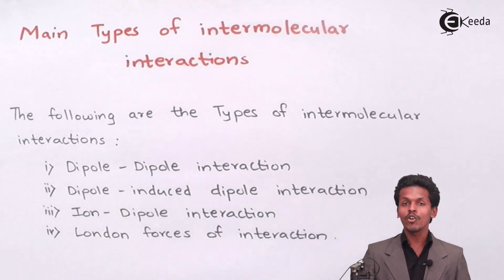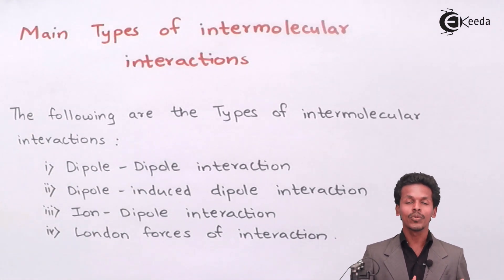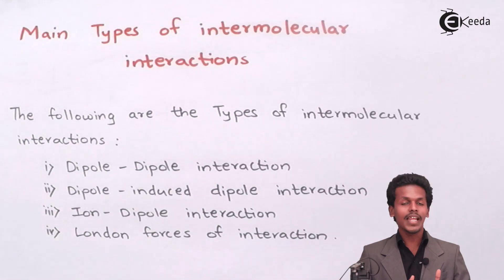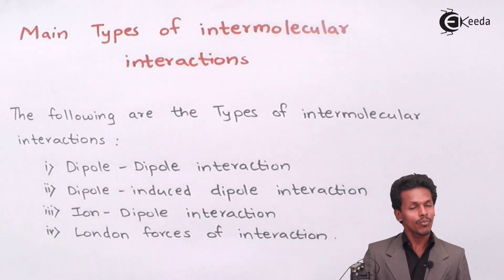Basically for any kind of matter, that is solid, liquid and gas, the existence is because of the force of attraction between the atoms or molecules with each other. They have various types of interactions by which a solid, liquid or gas have interactions with their neighboring atoms and molecules.